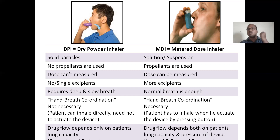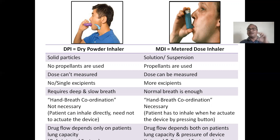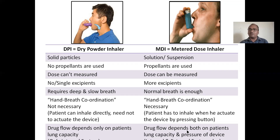Whenever you activate the MDI device, the dose will be measured by the equipment — each press delivers a fixed measured quantity, such as 1 ml or 2 ml. That measured quantity will be delivered each time you press. Drug flow in DPI depends only on the patient's lung capacity, whereas in MDI, drug flow depends on both lung capacity and the pressure of the device.